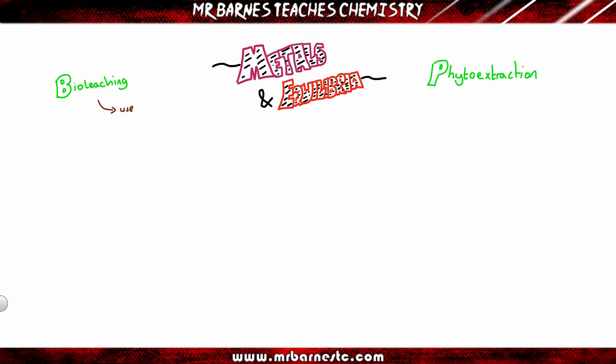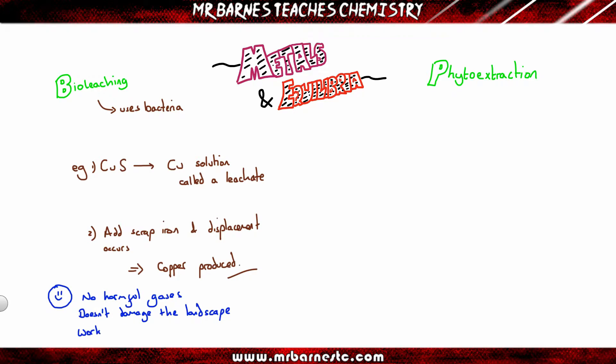Let's start with bioleaching. If you're bioleaching, it means you're using bacteria. The clue is in the name. The main example you need to know is copper sulphide, CuS. When you use bacteria, it will break that down into a copper solution. That solution is called a leachate. Once you've done that, you add scrap iron to that solution and you get a displacement reaction. You take iron from a junk heap, your scrap iron, add it in, and your copper will be produced, your copper metal. The benefit to this method is it doesn't produce any harmful gases, it doesn't damage the landscape, and it works at low temperatures, so it'll work pretty much anywhere. However, it takes a long time, it's really slow, and it can produce toxic chemicals. So although there are no harmful gases, it can produce toxic chemicals and things like sulfur dioxide.